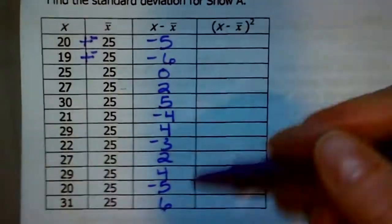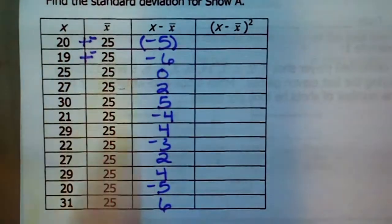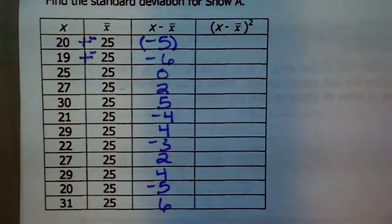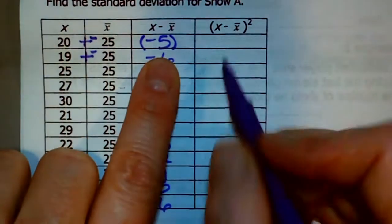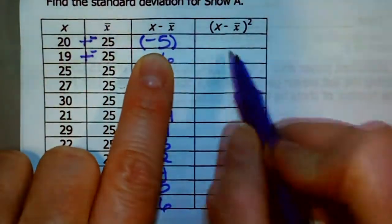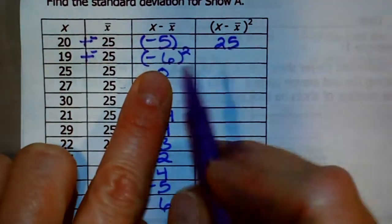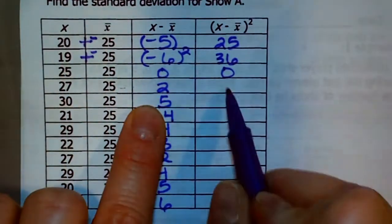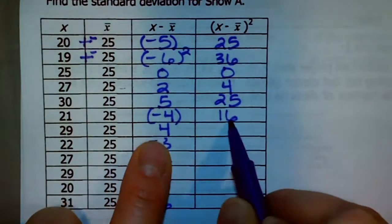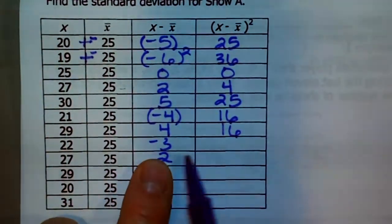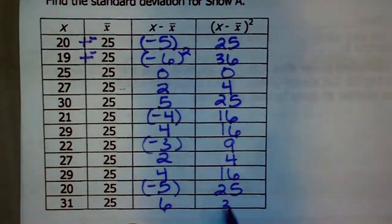Now we're supposed to square that result. When the result is negative, like negative 5, treat it as the quantity of negative 5 squared — meaning negative 5 times negative 5, which is positive 25. So negative 6 squared is 36. 0 squared is 0. 2 squared is 4. 5 squared is 25. Negative times negative is positive, so you won't get a negative result here. Continuing: 16, negative 3 squared is 9, 4, 16, negative 5 squared is 25, and 36.